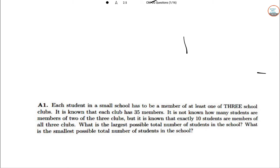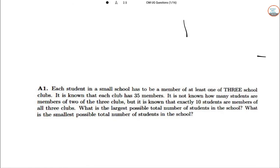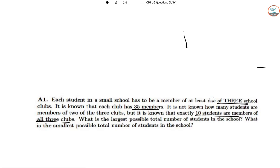So this is part one. Each student in a school has to be a member of at least one of the three school clubs. It is known that each club has 35 members and it is not known how many students are members of two of the three clubs. But it is known that exactly 10 students are members of all three clubs. So quite an advanced level set theory has been given. What is the largest possible number of students in the school and what is the smallest number of students in this school as well.